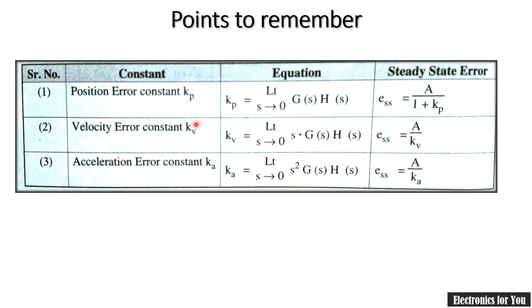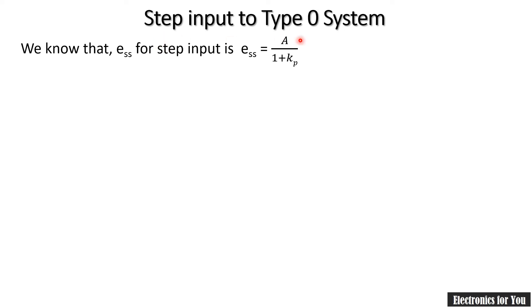Now, these are the points to be remembered. We have covered these in our previous video. If you don't know about the positional, velocity, and acceleration error coefficients — Kp, Kv, and Ka — please watch our previous video. The positional error constant Kp equals limit s→0 of G(s)·H(s). Kv equals limit s→0 of s·G(s)·H(s), and Ka equals limit s→0 of s²·G(s)·H(s). Steady state error for step input: ESS = A/(1+Kp); for ramp: ESS = A/Kv; for acceleration: ESS = A/Ka.